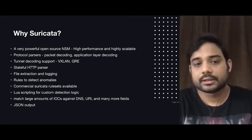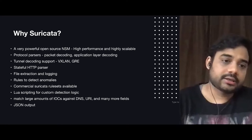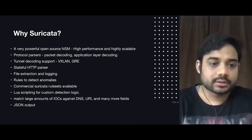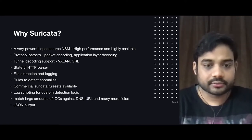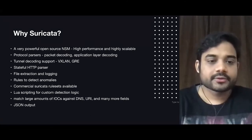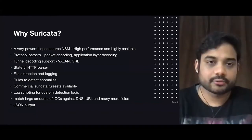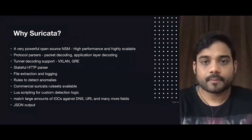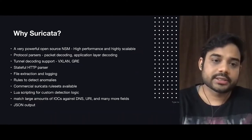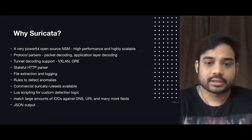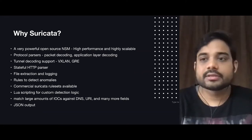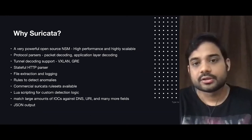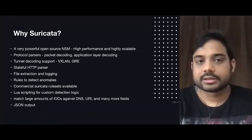Suricata works on a rule-based alerting engine where rules are written to detect anomalies. By default, open source rule sets are available, but you can also use commercial Suricata rule sets. The detection logic lets you write Lua scripts for custom detection, and you can even use MISP to match IOCs against DNS requests, URIs, or other fields. The best part is that it generates output in JSON, so you can easily feed it into Elasticsearch or whatever SIEM solution you use for visualization and alerting.